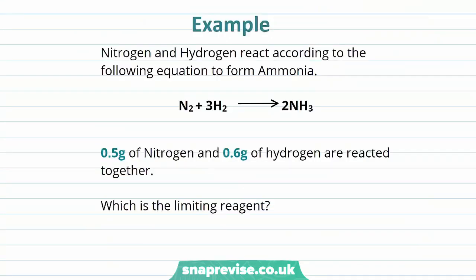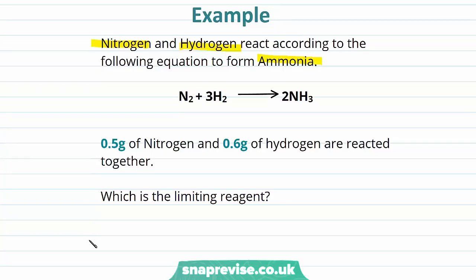So let's have a look at a chemical example to put this into context. Nitrogen and hydrogen react according to the following equation to form ammonia — this may be an equation you're familiar with. 0.5 grams of nitrogen and 0.6 grams of hydrogen are reacted together. We know the stoichiometry of the reaction: the nitrogen and hydrogen react in a ratio of one to three. We also know the masses involved and we can work out the molar masses from our periodic table.